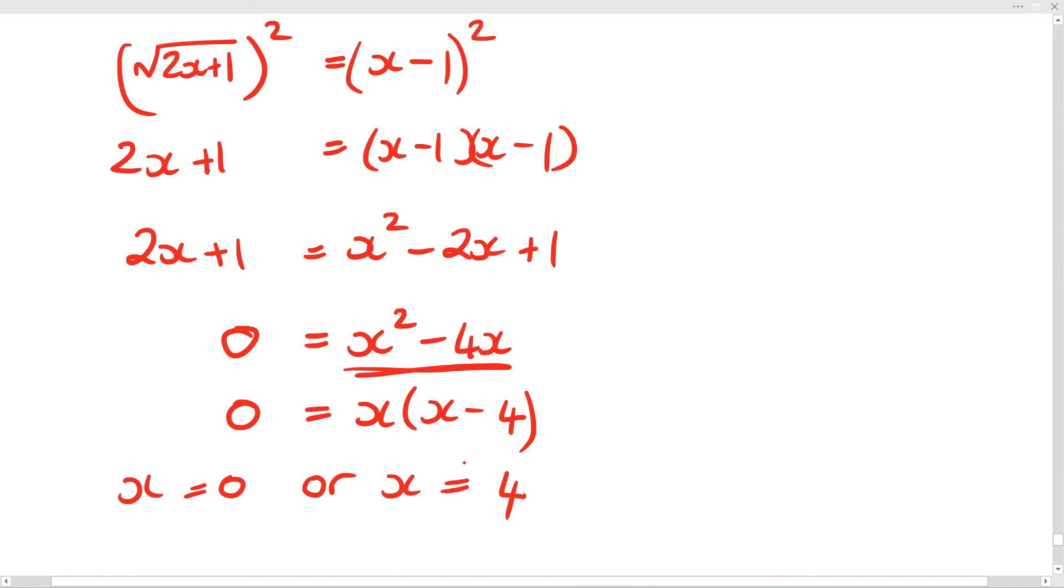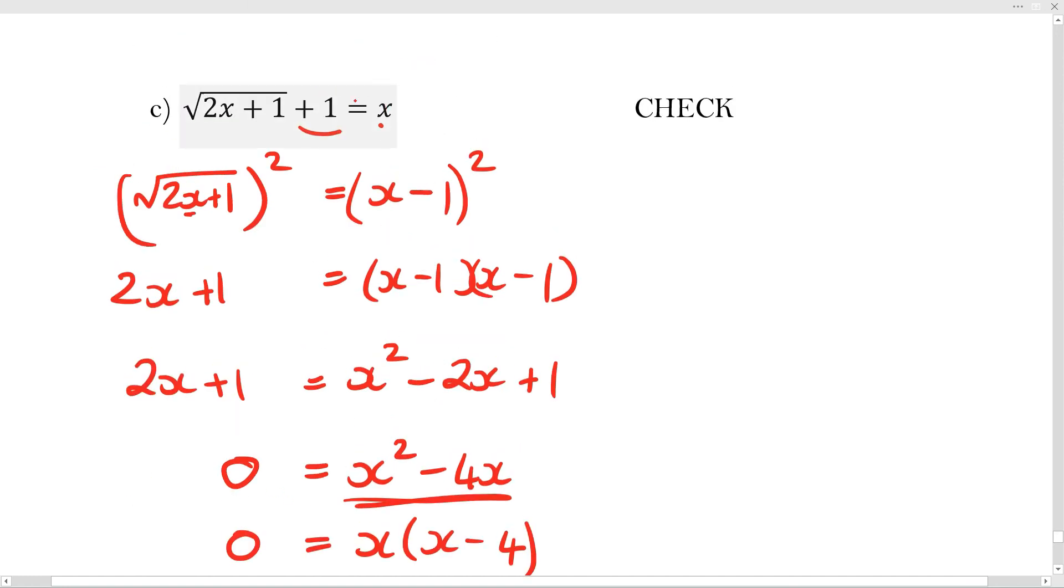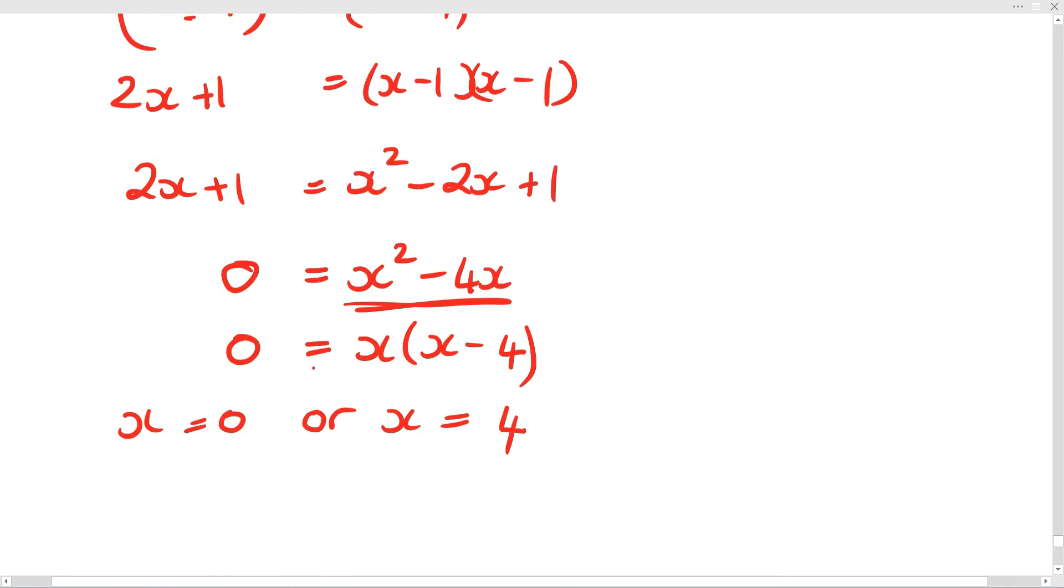When you do your check left hand side, right hand side, and I'm not going to show the writing out. It's really unnecessary. All you do is you sub in your 0 into the x, into the original question and you get your answer. And you check whether your left hand side actually equals your right hand side. And you do it for both the 0 and the 4. And what you're going to find out is that it doesn't work for the 0 and it does work for the 4 and you actually get a mark for doing that.